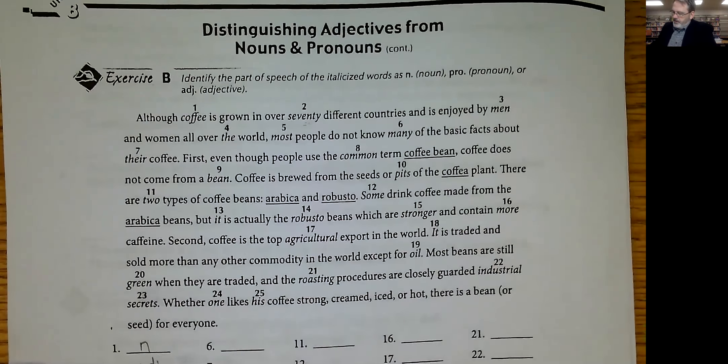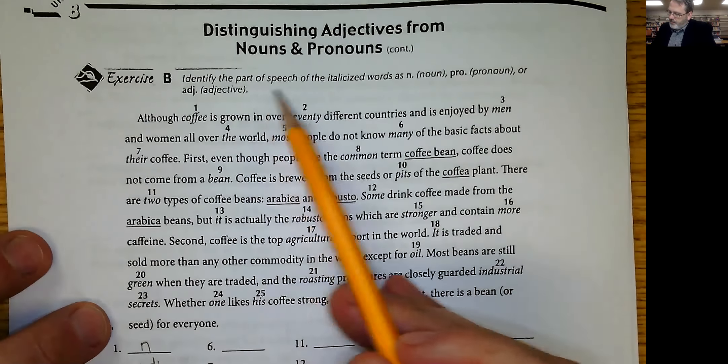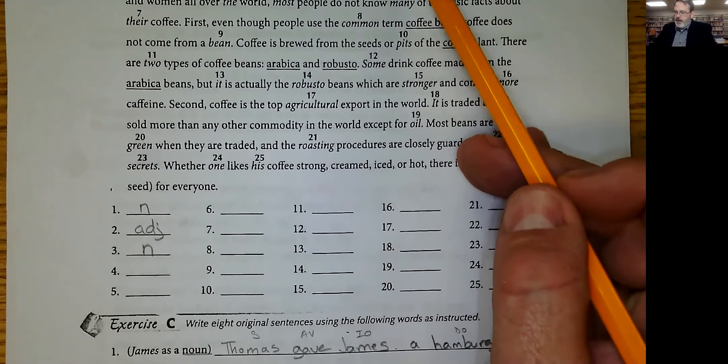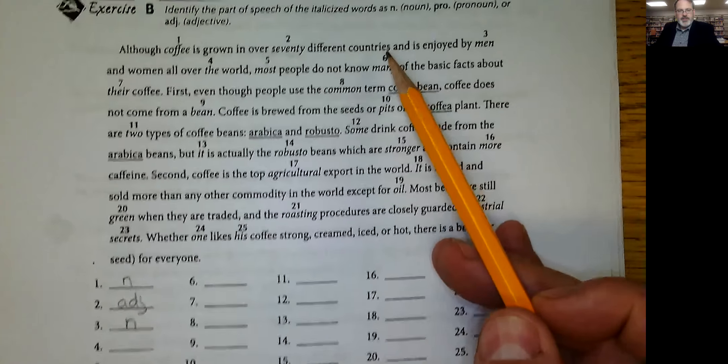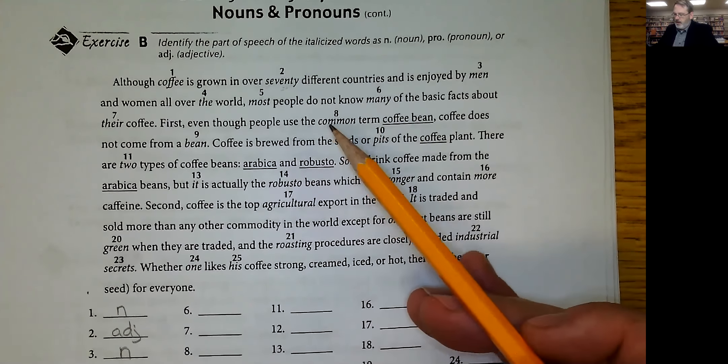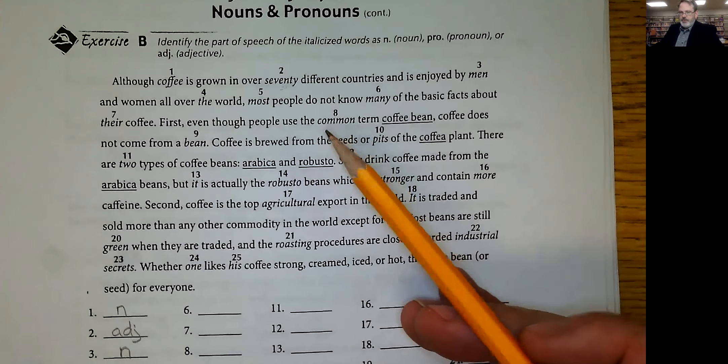We've already done the first few. Identify the part of speech of the italicized words as noun, pronoun, or adjective. Okay, just have those three: noun, pronoun, adjective. So we can handle that. All right, number four.